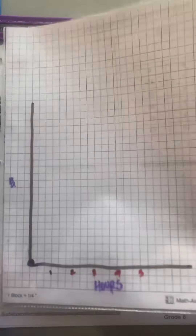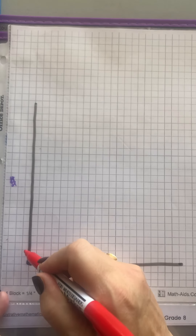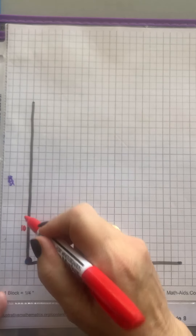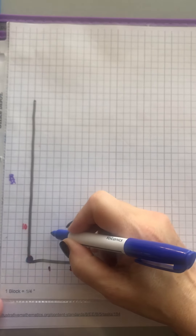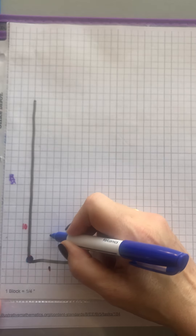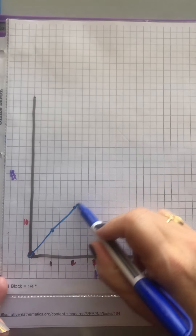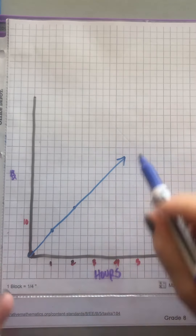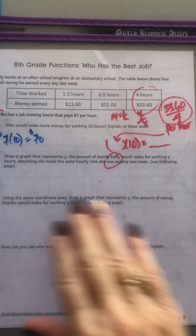For example, Mariko is making $7 an hour, so I might make each increment worth $2 — $2, $4, $6, $8, $10 — something like that. Then I would say Mariko makes $7 in one hour, and in two hours makes $14, and then I would draw Mariko's line. I would do the same thing for Kelly. That's what B and C are — drawing those lines. Part D asks how you can see who makes more per hour just by looking at the graphs — just look at it and explain what you see.